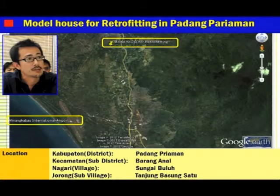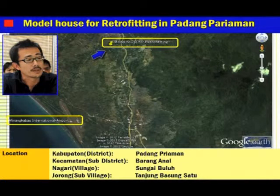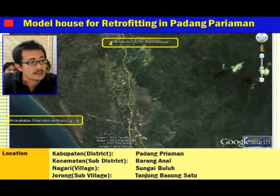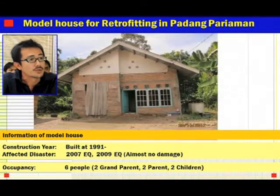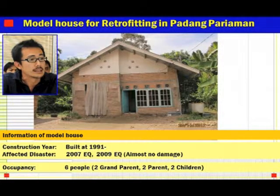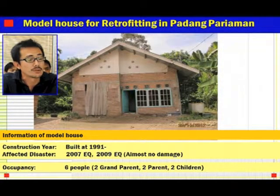This model house in Padang Pariyaman is located near Padang Airport — it takes about 15 minutes by car. The location is in Padang Pariyaman, Balang Anari, Nagari Sangai Rural. This house selected for the retrofitting project was constructed in 1991, meaning it has experienced two big earthquakes, in 2007 and 2009, but this house had no damage from those events.